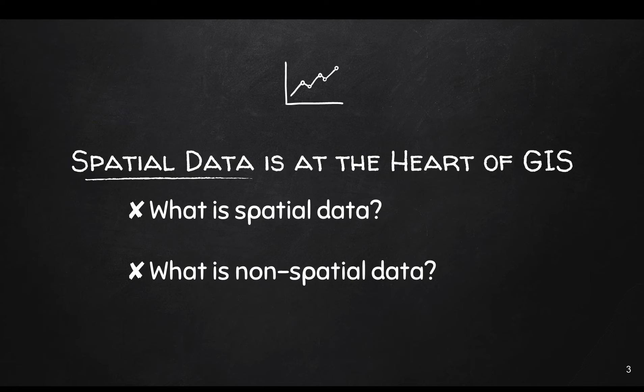So what is non-spatial data? Non-spatial data is descriptive of spatial data. For example, your house has a location on the earth's surface — that's spatial data. But the non-spatial data components of your home include the color of your house, the number of bedrooms and bathrooms, the number of stories, if it's a single or two-story house, or whether it has a pool. These are attributes about your home and they don't have a spatial component, so they are referred to as non-spatial data.